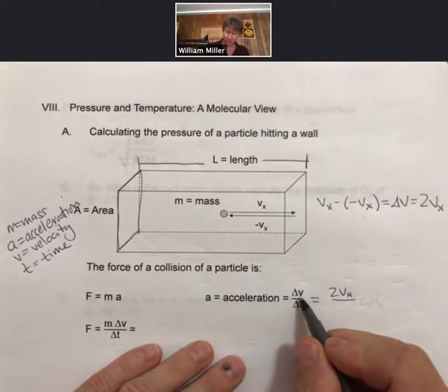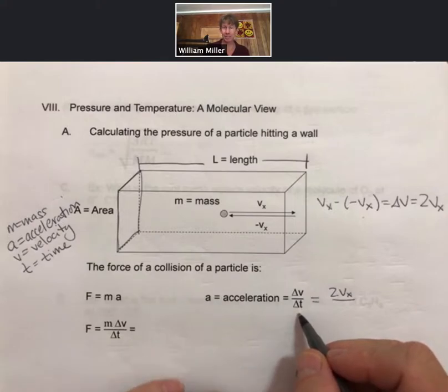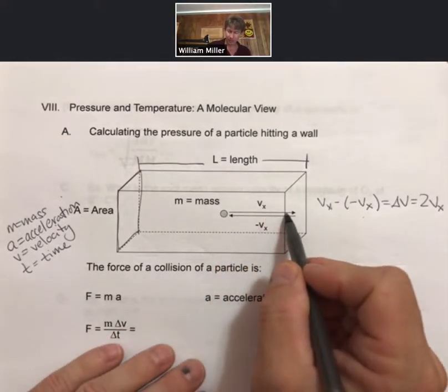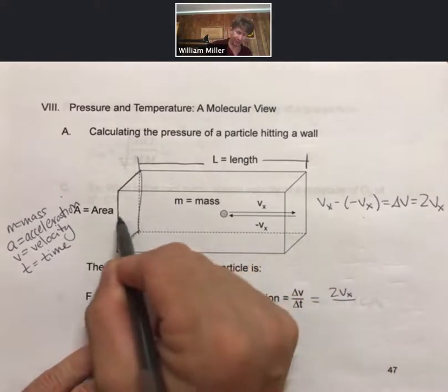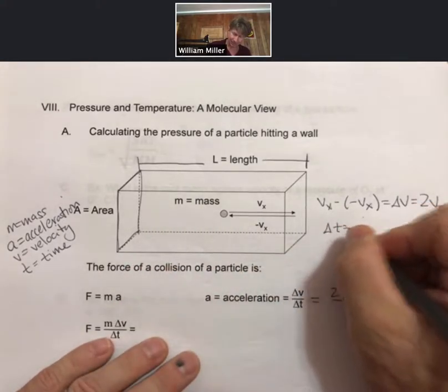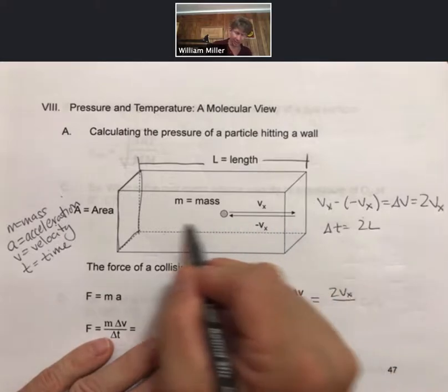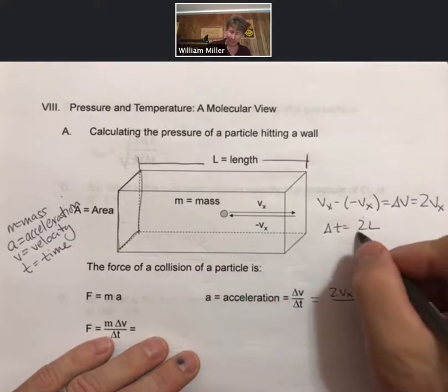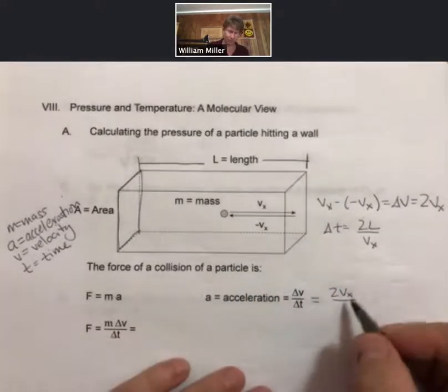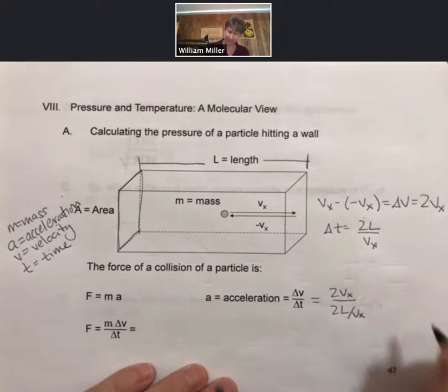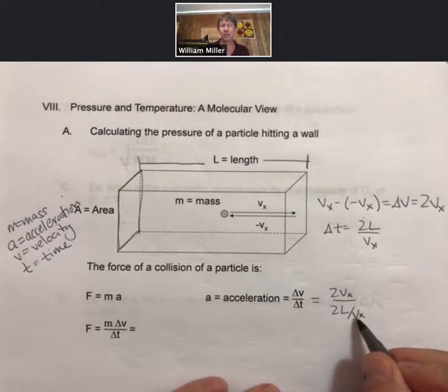Now the collision occurs every delta t, and delta t is the time between collisions. The time between collisions—well it bumps into this wall, then it's going to go down and then come back. Since the length of this, the distance between collisions, is going to be L and then another L, so that's 2L, and it's going to take an amount of time to get back divided by the velocity. So 2L over v_x, where v_x is in the denominator of the denominator.